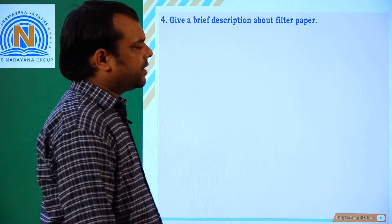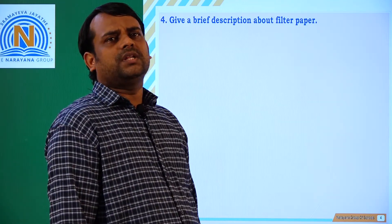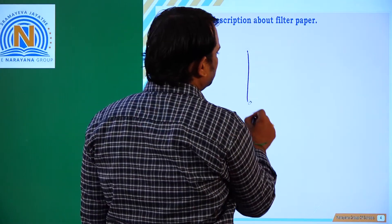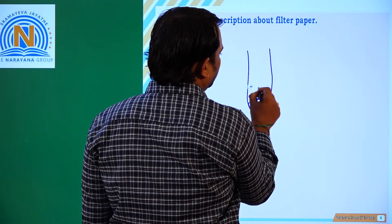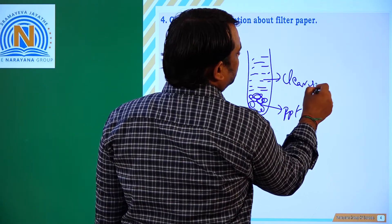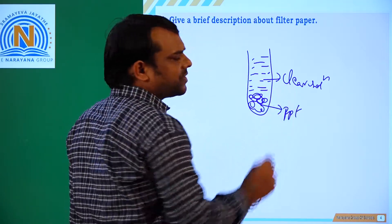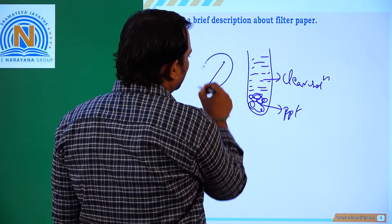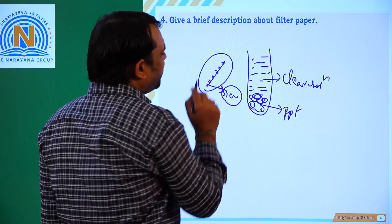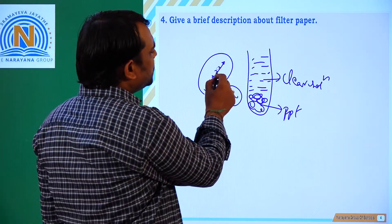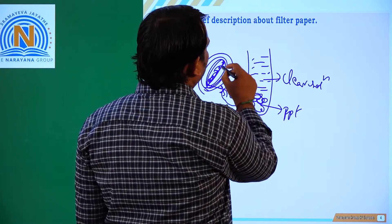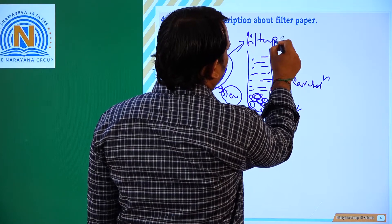Give a brief discussion about filter paper. So generally by using filter paper, we separate the precipitate from a clear solution. This is a precipitate and this is the clear solution. The process of separation of the precipitate from the clear solution uses a porous membrane — a paper which has tiny holes. This paper works just like a sieve, separating the precipitate from the clean water. This paper is called filter paper.